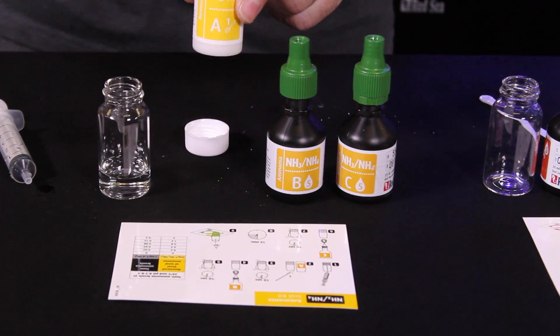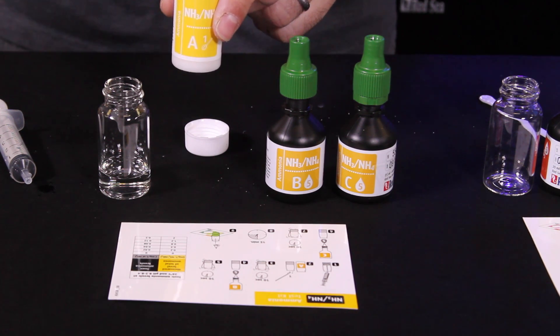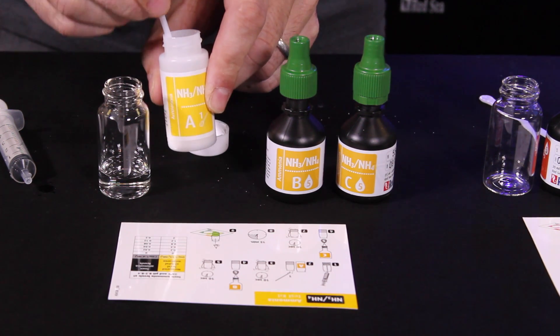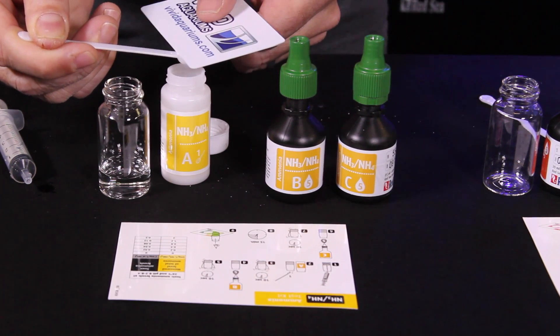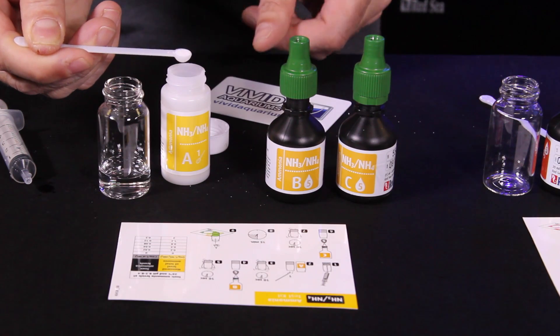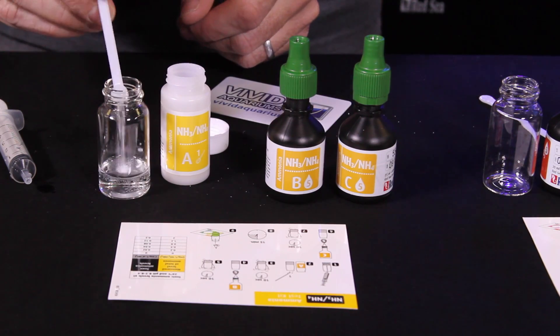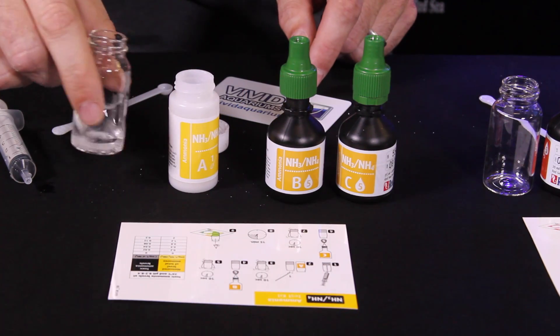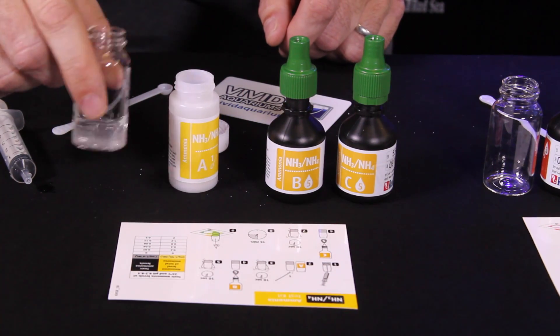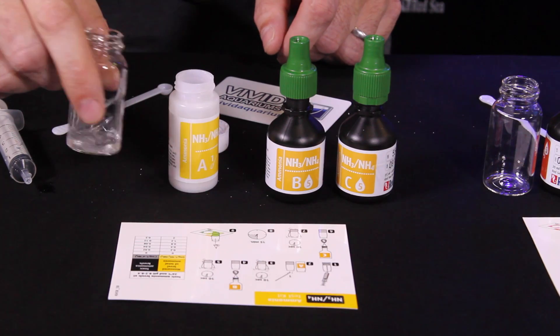The first step of the ammonia test is to take one level scoop of powder from reagent A, and sometimes it's useful to use a card to kind of level that off almost like you're baking a cake, so you get an equal amount of reagent each time. That way your tests are accurate. Now it says to swirl that for 10 seconds. You want to make sure that powder is completely dissolved.